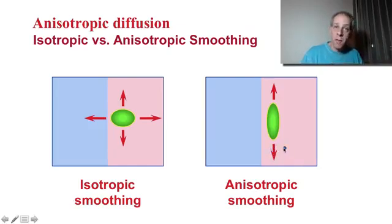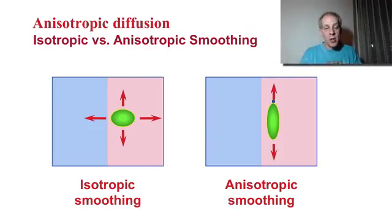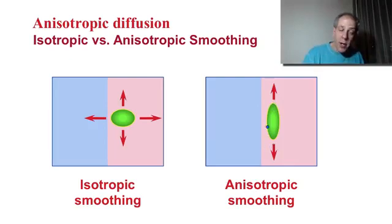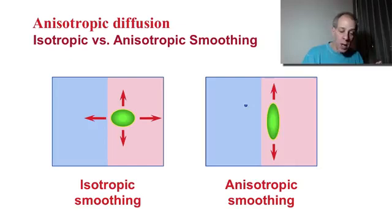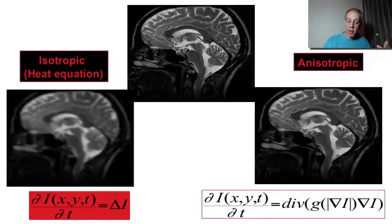What anisotropic diffusion is trying to do is average pixel values only on the right side of the object, on the correct side of the edge. Pixel values on one side are averaged among themselves to denoise or enhance the image, and pixel values on the other side are mixed among themselves. We achieve this with partial differential equations.